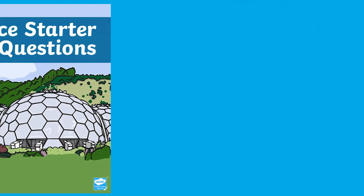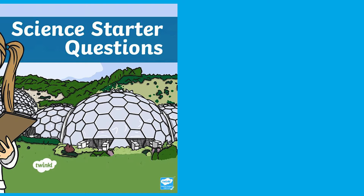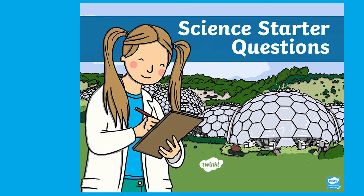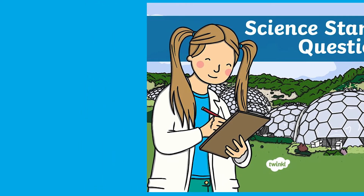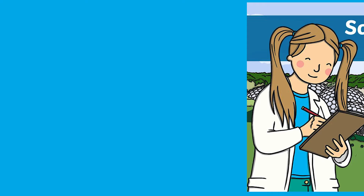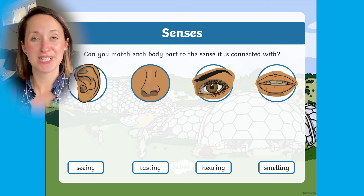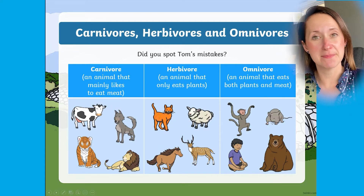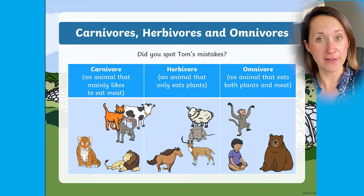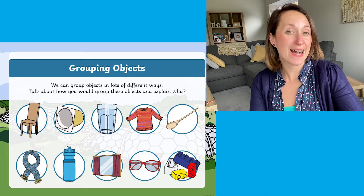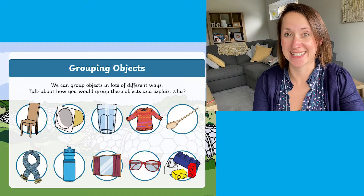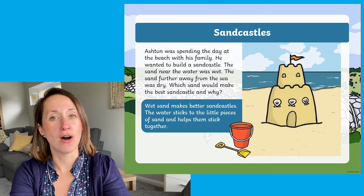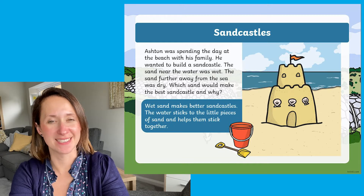This fabulous science starter questions PowerPoint contains a selection of superb starters across a range of scientific disciplines. Some examples of the activities included are: you could match the body part to the sense it's connected with, or group animals depending on whether they're carnivores, herbivores or omnivores, group household items according to their physical property, or use those thinking skills to solve a problem on which is the best way to build a sandcastle.